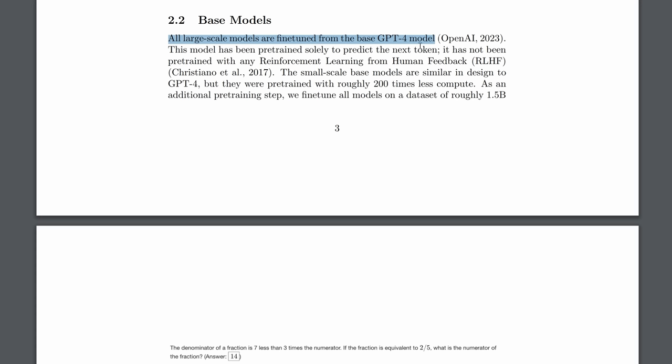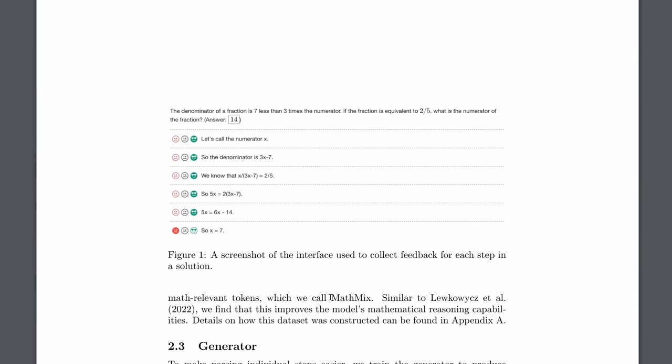First, they used the base model of GPT-4, not the one with reinforcement learning from human feedback. Next, they fine-tuned that base GPT-4 model on a data set of roughly 1.5 billion math related tokens. Further on, they call that the math mix. This being OpenAI, of course, they don't give you the exact details of that math mix. I'll come back to that later on.